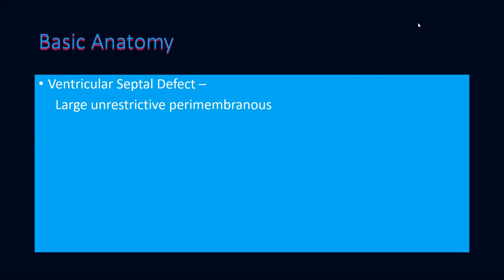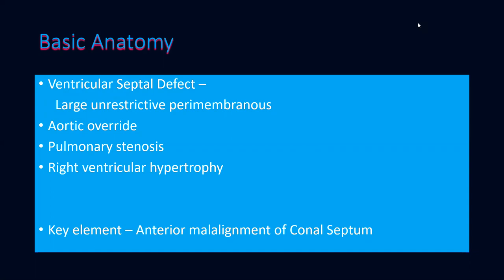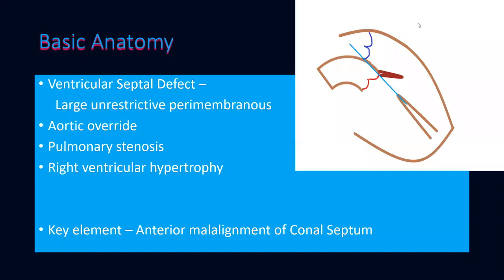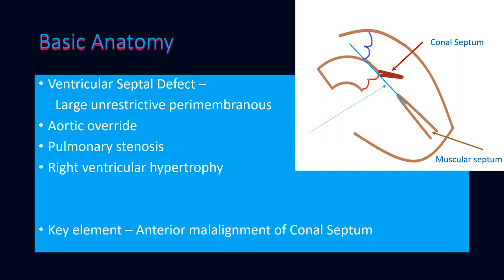The basic anatomy as described by Fallot is a ventricular septal defect — characteristically a large, unrestrictive, perimembranous defect — along with aortic override, pulmonary stenosis, and right ventricular hypertrophy. But the key element is an anterior malalignment of the conal septum. During septal development, the conal or outlet septum must join the muscular septum. When there is a slight malrotation of the heart, this fusion does not occur and the conal septum is tilted anteriorly — this is known as anterior malalignment of the conal septum.